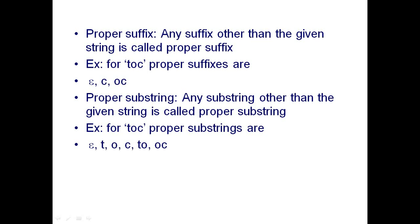Any suffix other than the given string is called a proper suffix. For TOC, proper suffixes are: epsilon, C, and OC — removing TOC. Similarly, proper substring: any substring other than the given string is called a proper substring. For TOC, proper substrings are: epsilon, T, O, C, TO, and OC — removing TOC.